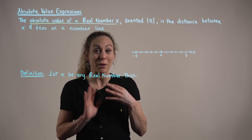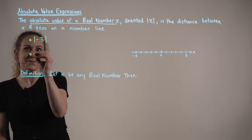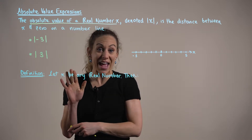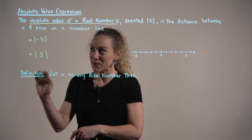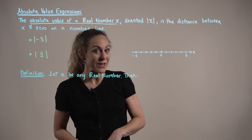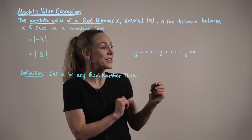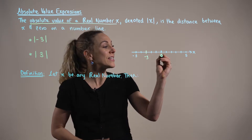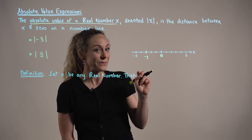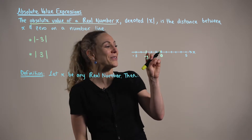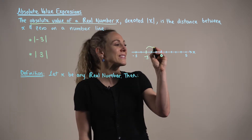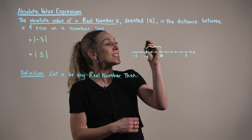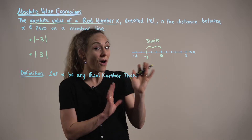Let's consider an example to help us better understand this concept. We're thinking about the absolute value of negative three. Looking at our number line, we want to ask ourselves how many units away from zero is negative three. We can literally count the units — one, two, three. So even though x is a negative value, it's still a total of three units away from zero on the number line.